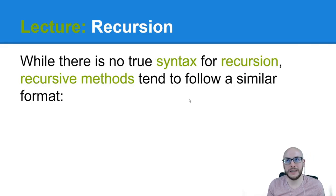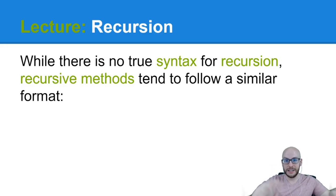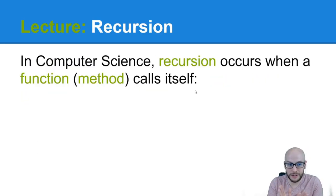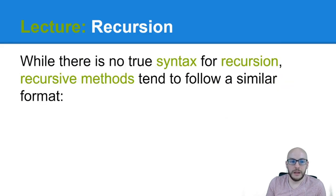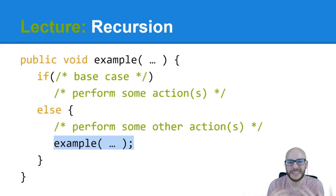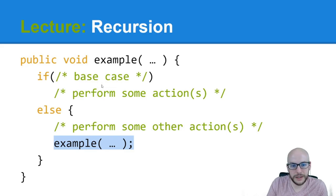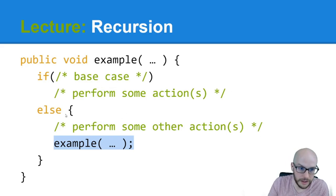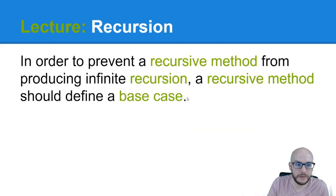Part of what makes recursion difficult to teach is there is no true syntax. With for loops I can say here's the syntax, here's the flow — but that's just not the case with recursion. Simply put, a recursive method is a method that calls itself. What you're going to encounter in this course will follow a very similar format: we have an if statement for the base case, perform some actions, otherwise perform other actions, and the method calls itself.